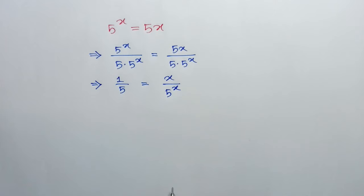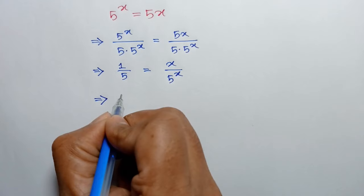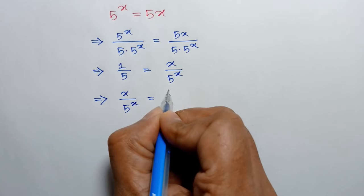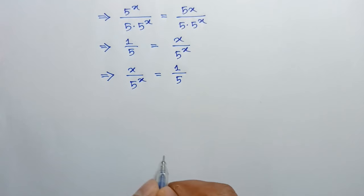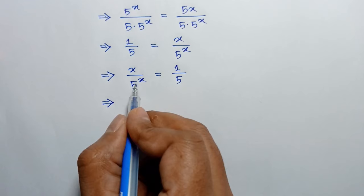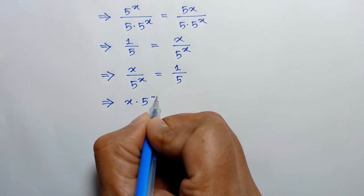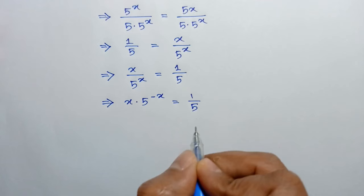Now, exchanging sides, we can write x over 5 to the power x is equal to 1 over 5. According to the law of exponents, we can rewrite this as x times 5 to the power negative x is equal to 1 over 5.